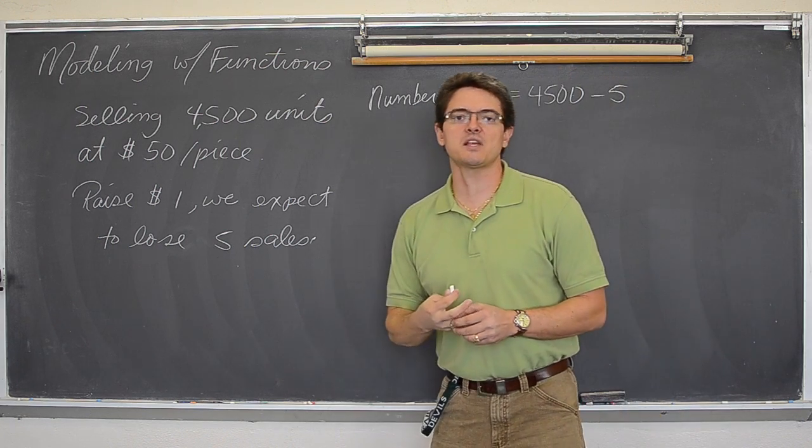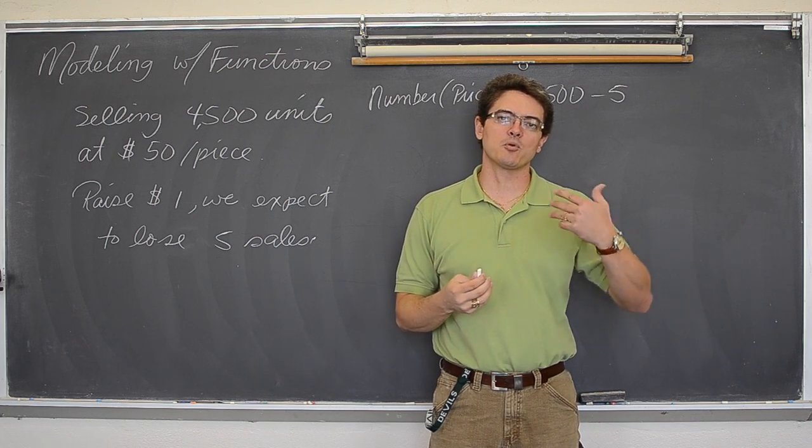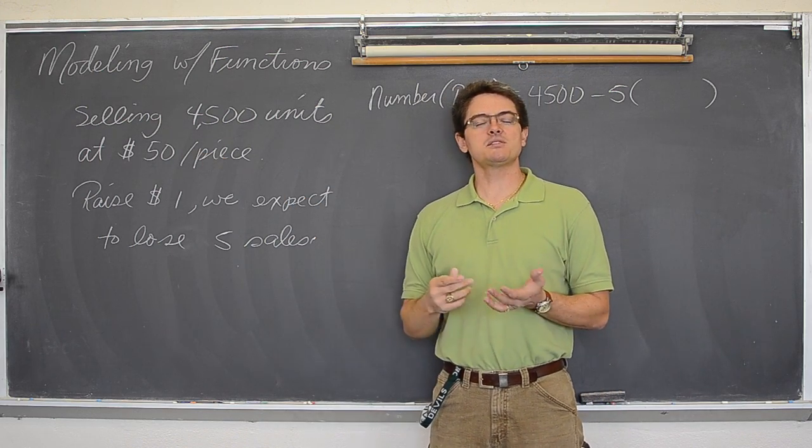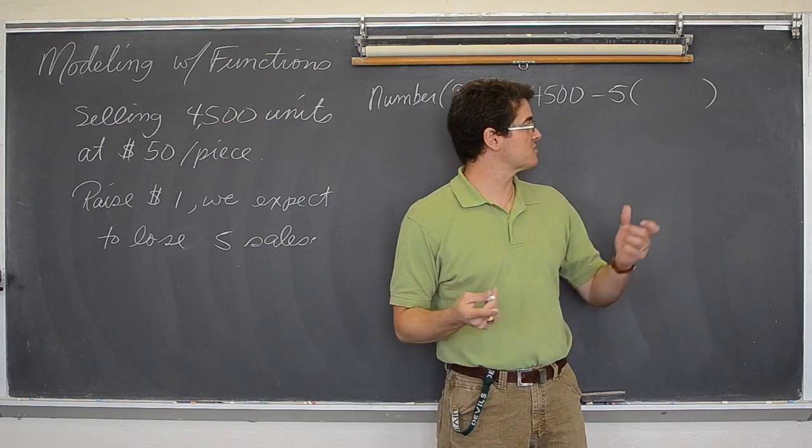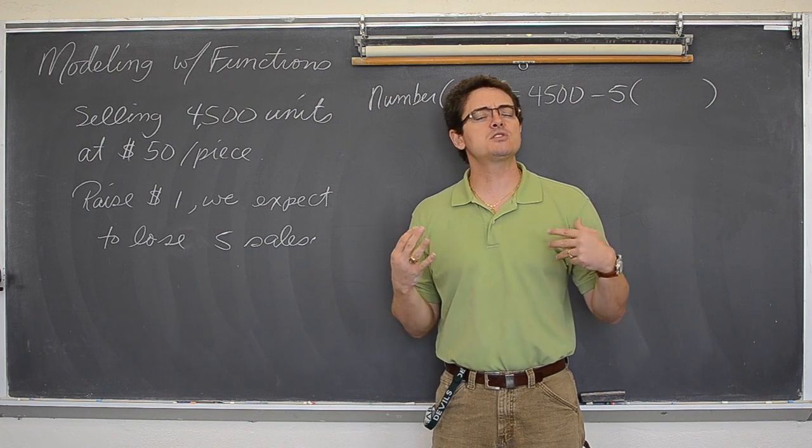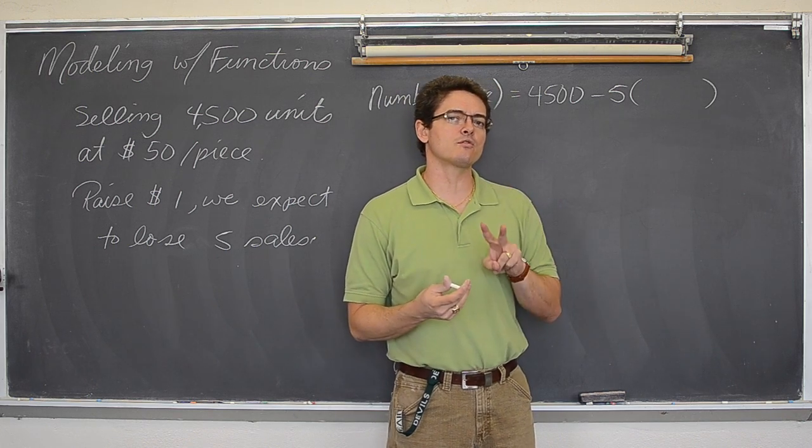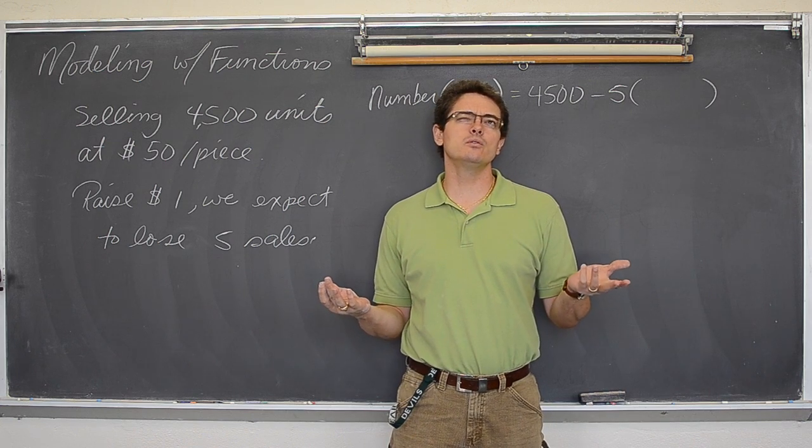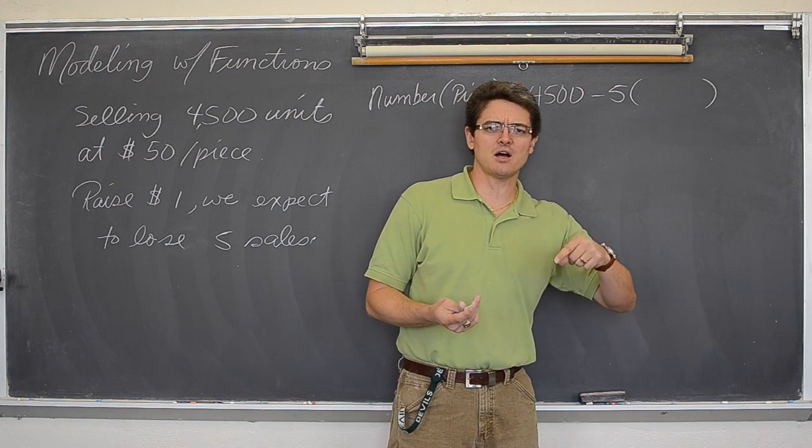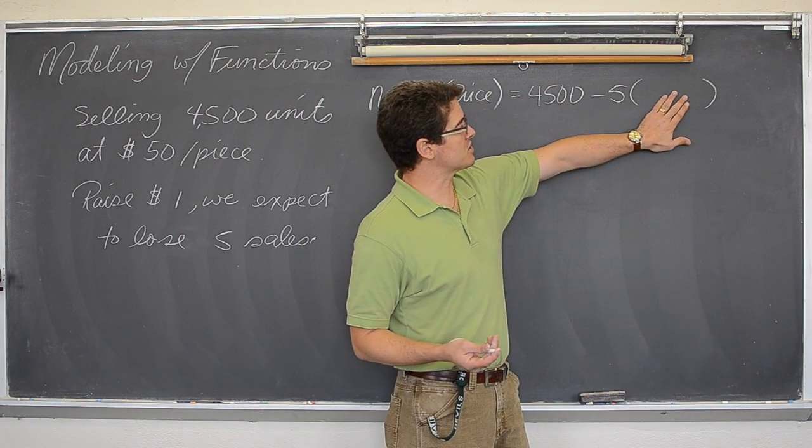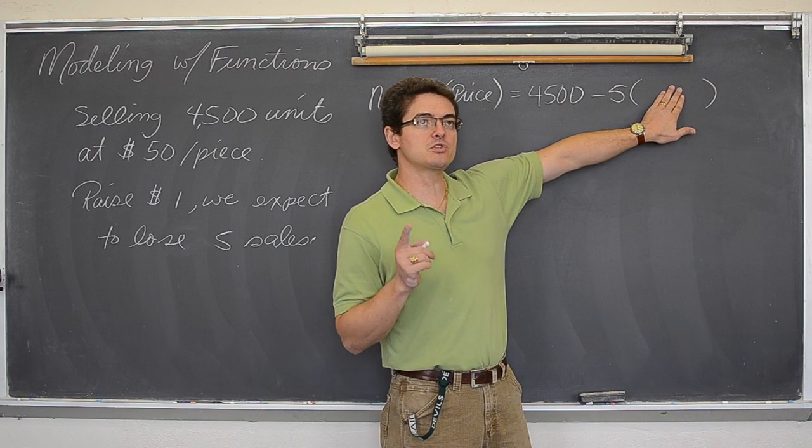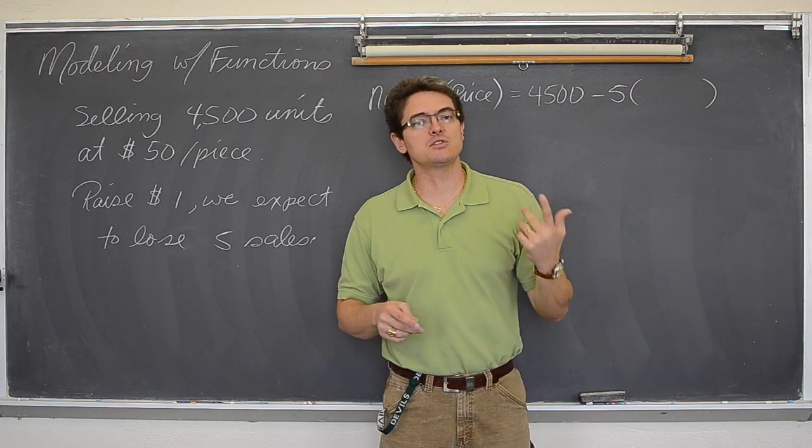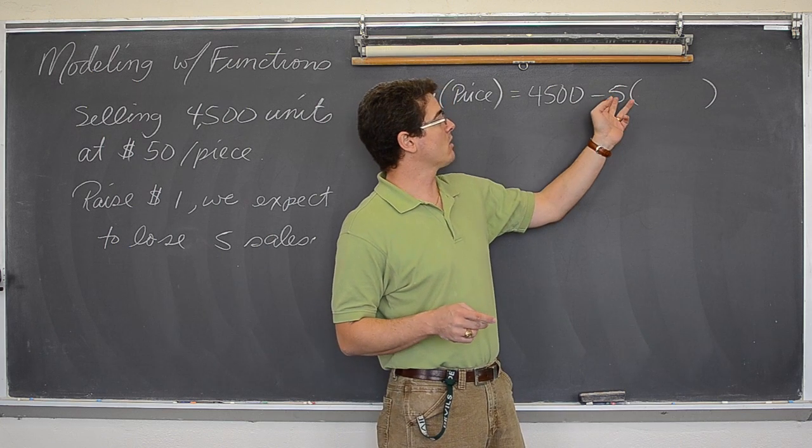And we are expecting our sales to go down five every time we raise it by a dollar. You know, based on some kind of market research. So we are going to lose five units of sales for every dollar that we mark up the price. How do we bring that into this formula? Well, let's say we are selling it for fifty. Let's say we sold it for fifty-one. Well, wouldn't you just subtract five one time? And what if the item was fifty-two dollars? Well, fifty-two dollars is two dollars over fifty, so you would subtract five twice. Well, what if it was fifty-five dollars, the new price? Wouldn't you subtract five dollars five times, because you are five dollars over?